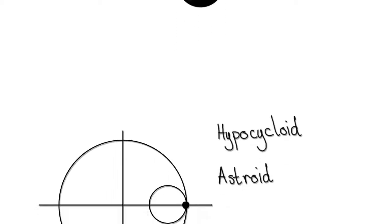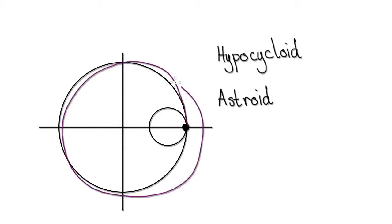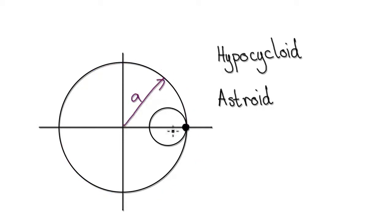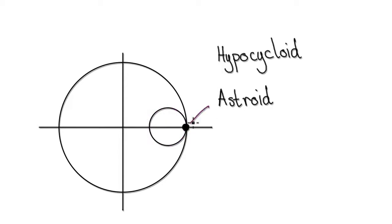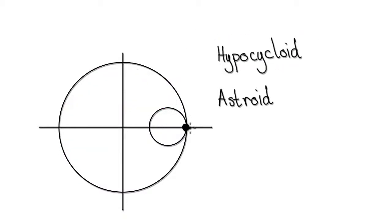In this video, we're going to come up with the parametric equations to describe a hypercycloid. Whenever you have a big circle of radius A and a smaller circle of radius B, when the smaller circle rolls inside the big circle, this particle here will trace out a path — this path is called a hypercycloid. In the special case where the circumference of the smaller circle is precisely a quarter of the circumference of the big circle...